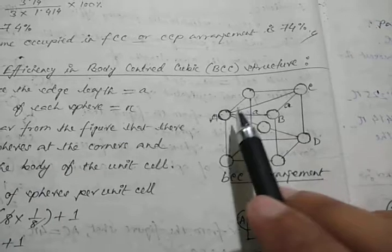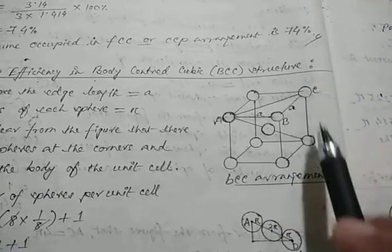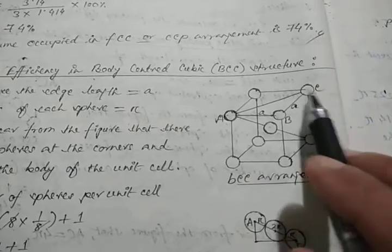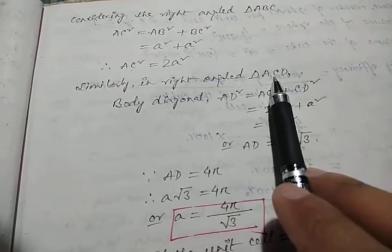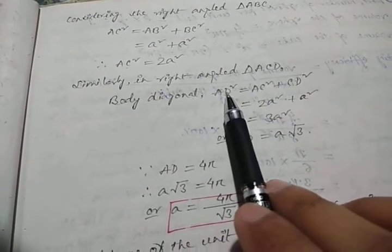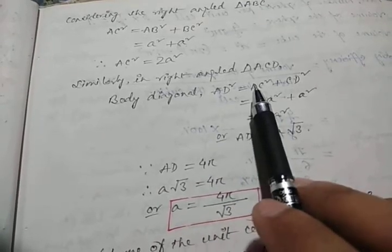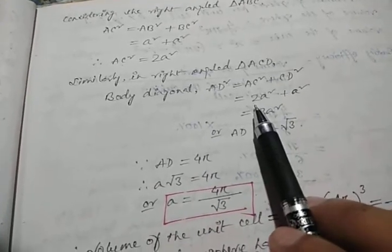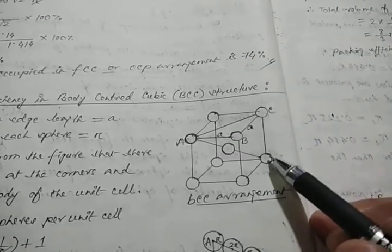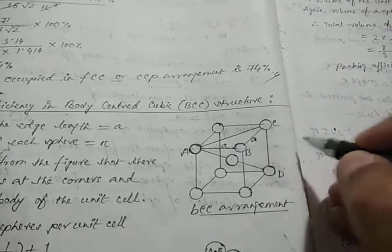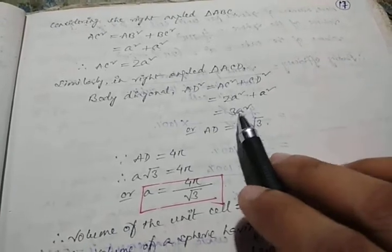AD square equals AC square plus CD square. AC square equals 2a square. CD is the edge length a, so CD square equals a square. Therefore AD square equals 3a square.